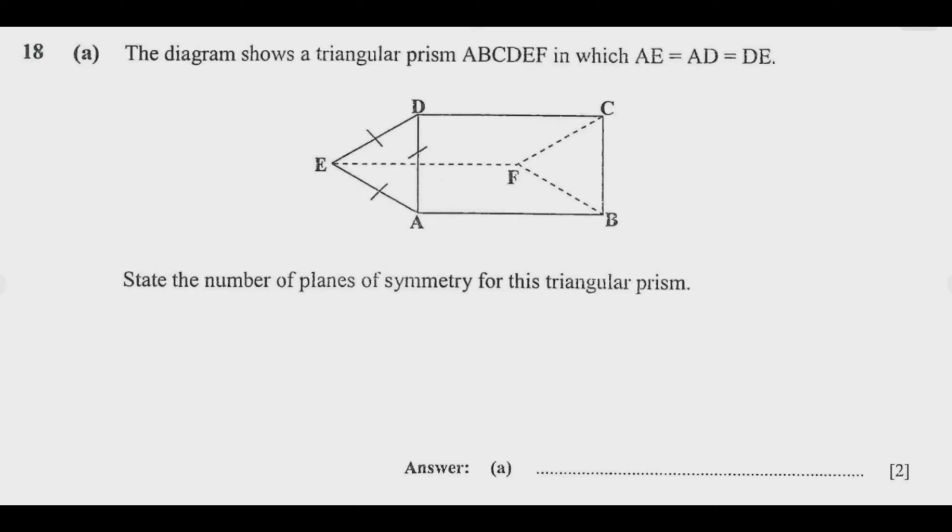We are looking at a regular triangular prism which technically has four planes of symmetry. Why are they four and how can we know them?